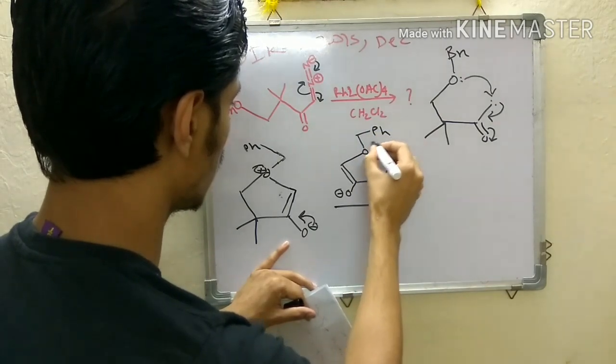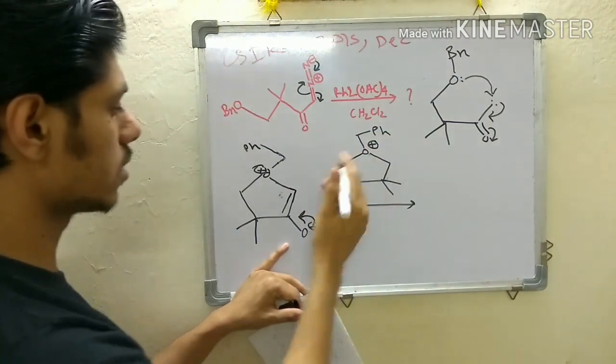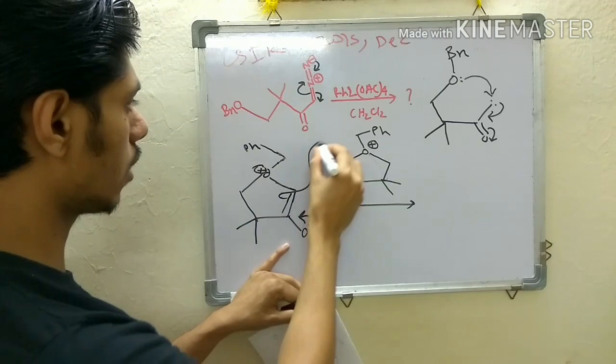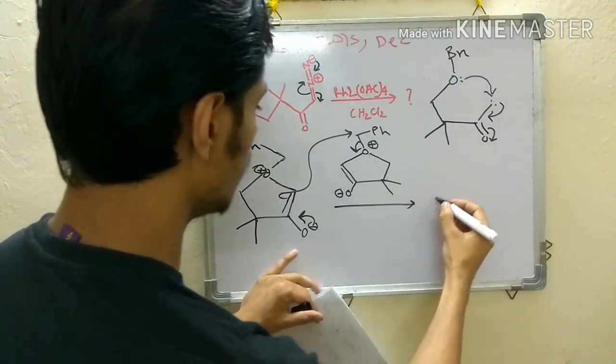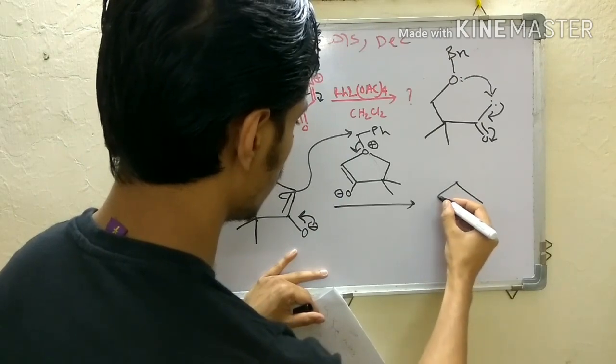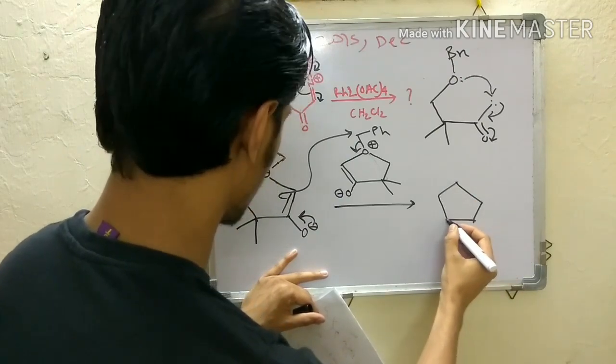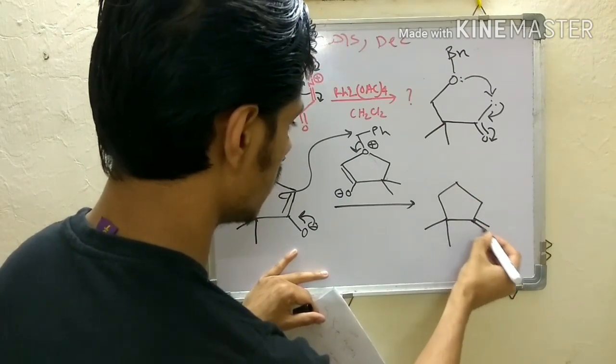So what I am trying to say is that this is O minus right and you have another molecules which are presenting this form. So it can attack on them also. So this molecule can be intermolecular as well as intramolecular.